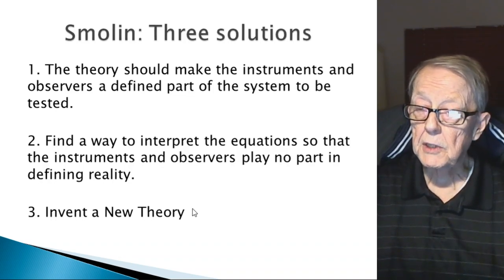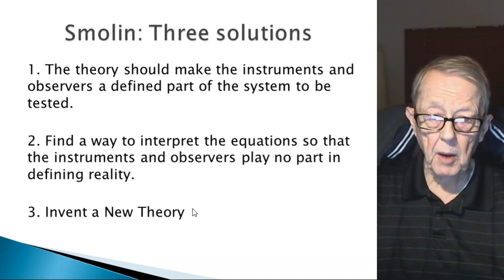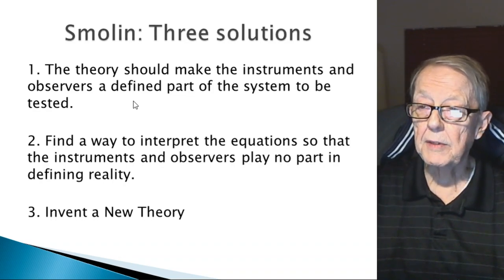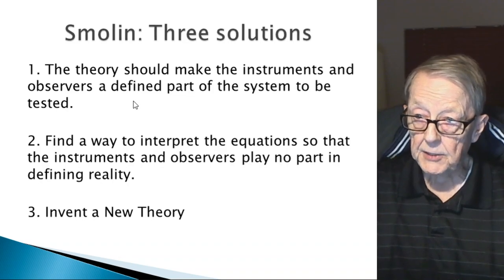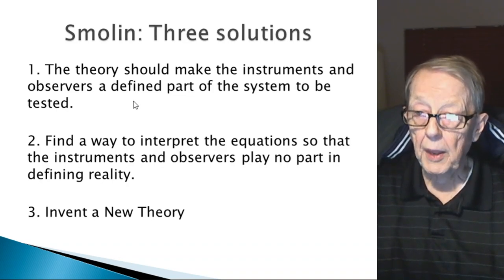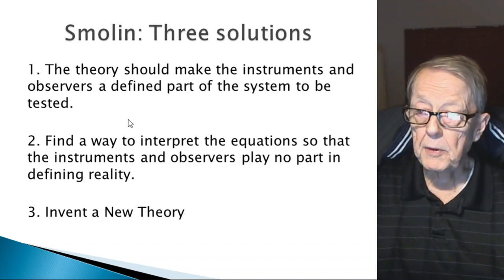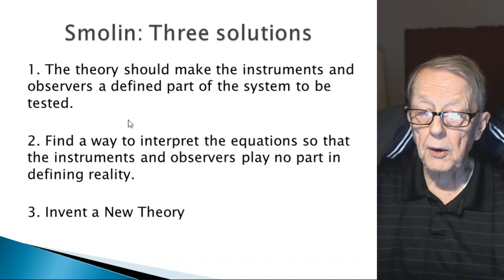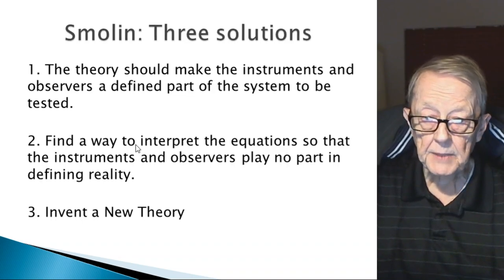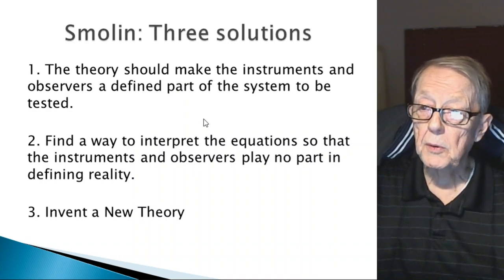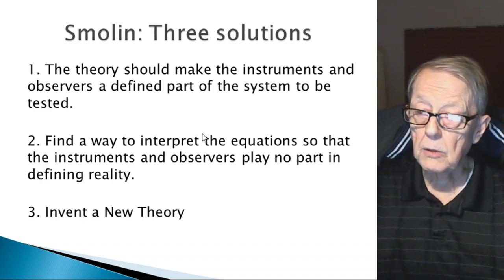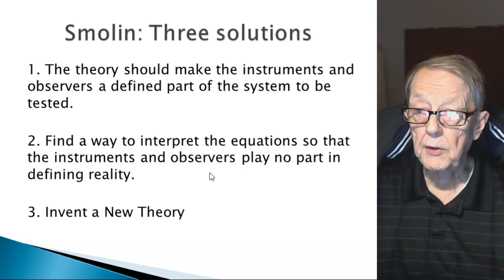Lee Smolin suggests three solutions to the quantum mechanics problem. Number one: the theory should make the instruments and observer a defined part of the system to be tested, instead of leaving them out — if they're going to be there, include them. The second is kind of the opposite: find a way to interpret the equations so that instruments and observers play no part in defining reality. These are opposing views, but both tend to save quantum mechanics. Barring those solutions, you need to invent a new theory.